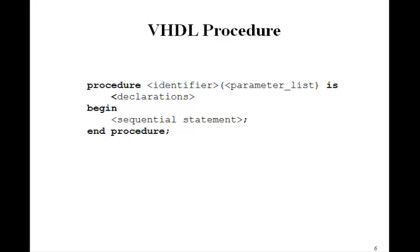Here's the general form of a procedure. It's the word procedure, followed by some identifier. And then this parameter list is essentially the same as in a port map in the entity that will give the inputs and outputs. And then you have is, the declarations, begin, end procedure, and then your sequential statements in here.